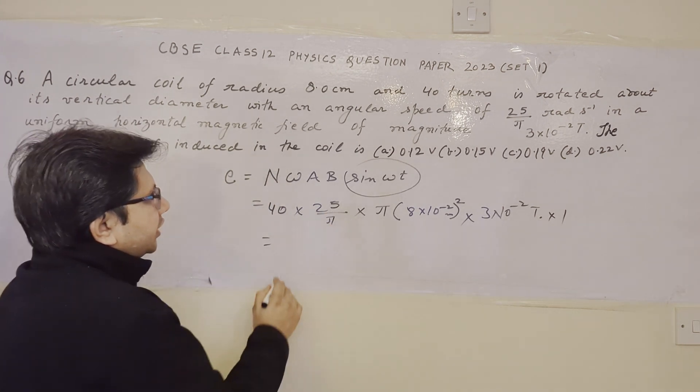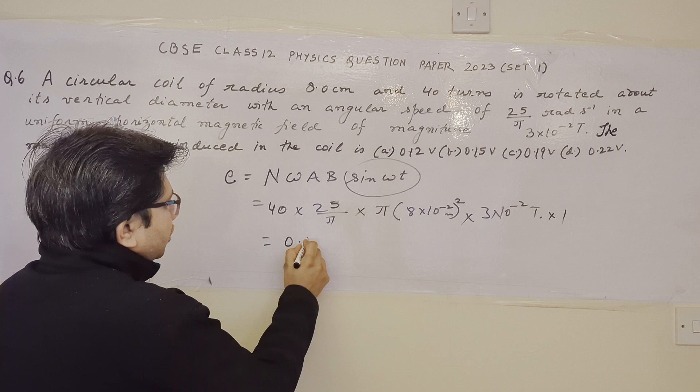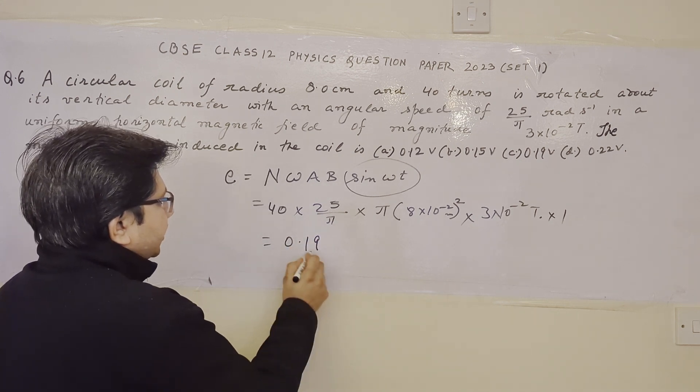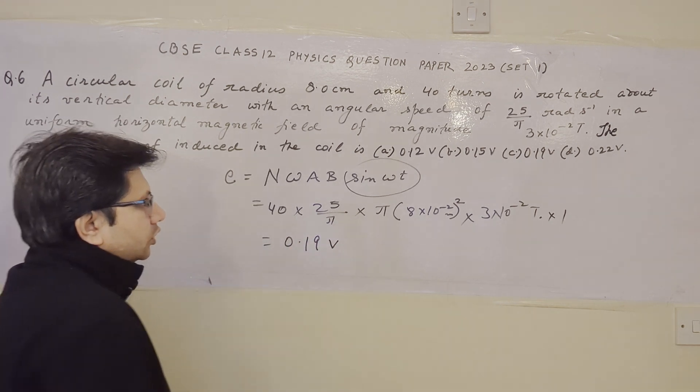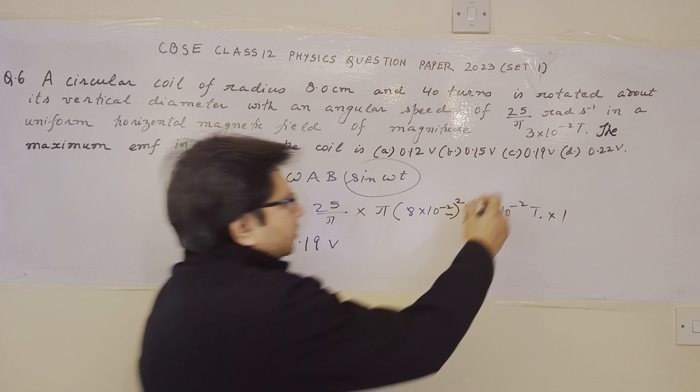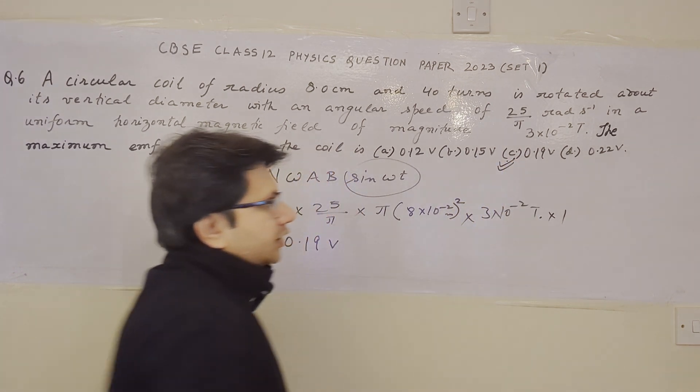After solving this, we get the EMF nearly equal to 0.192 or we can say that 0.19 volts. So 0.19, we can say that option C is correct here.